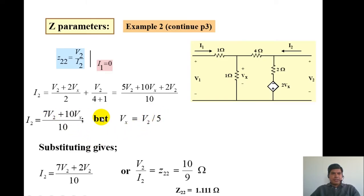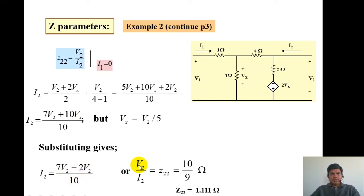Substituting Vx = V2/5 into the I2 expression gives I2 equal to (7V2 + 2V2) / 10, so the ratio V2 divided by I2 yields Z22 equal to 10/9 ohms, approximately 1.111 ohms.